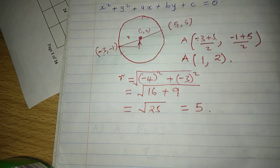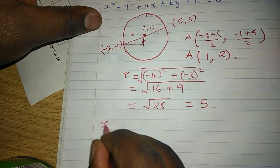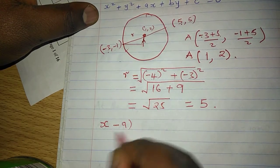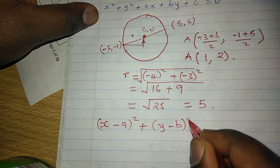So the radius is 5 units. Now that we have the radius of this circle, we can proceed to the calculation of the equation, because the equation of the circle is given by (x - a)² + (y - b)²